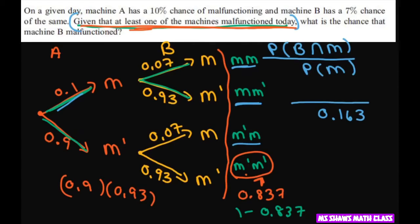Now, we want this part. We want malfunctioned and B. So, here's your B malfunction. Let's do this in blue. B malfunctions here and here.